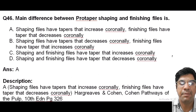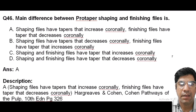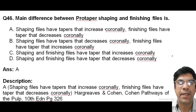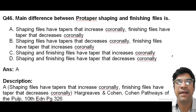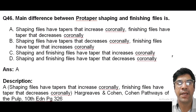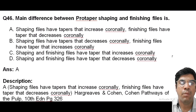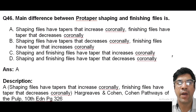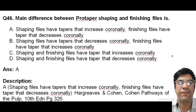The main difference between ProTaper shaping files and finishing files: shaping files have a taper that increases coronally, whereas finishing files have a taper that decreases coronally. Shaping files are used to prepare and shape the root canal — their taper becomes larger moving coronally toward the shaft. Finishing files are designed to provide a smoother finish and minimize ledges or irregularities — their taper decreases coronally, allowing for better control and refinement of the canal shape.